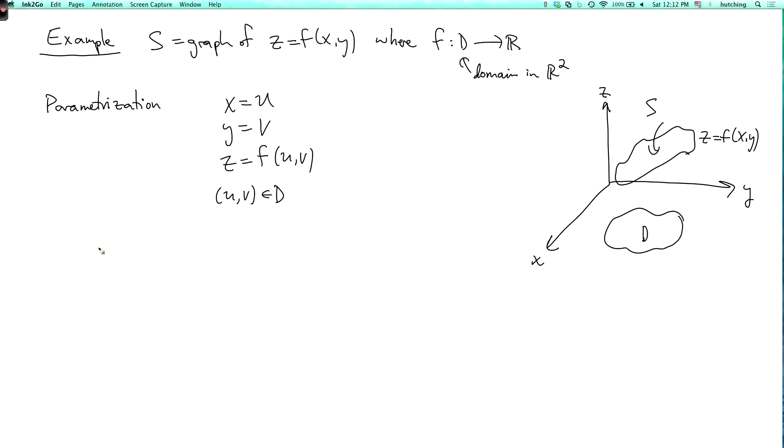Okay, so now what are r_u and r_v? So r_u is one comma zero comma f_u, which I could also write as f_x, because u and x are the same thing here. And r_v is 0 comma 1 comma f_y. So the area is the double integral over d of magnitude of r_u cross r_v.